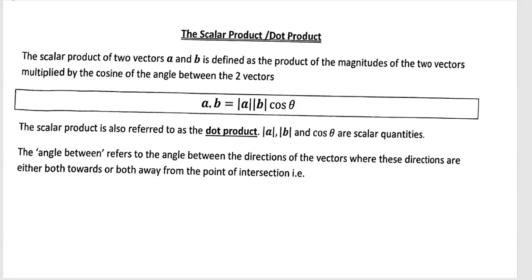In this video we're going to look at the scalar product or dot product for vectors. The scalar product of two vectors A and B is defined as the product of the magnitudes of the two vectors multiplied by the cosine of the angle between them. So vector A dot vector B equals the modulus of A times the modulus of B times cos of theta, where theta is the angle between the two vectors.